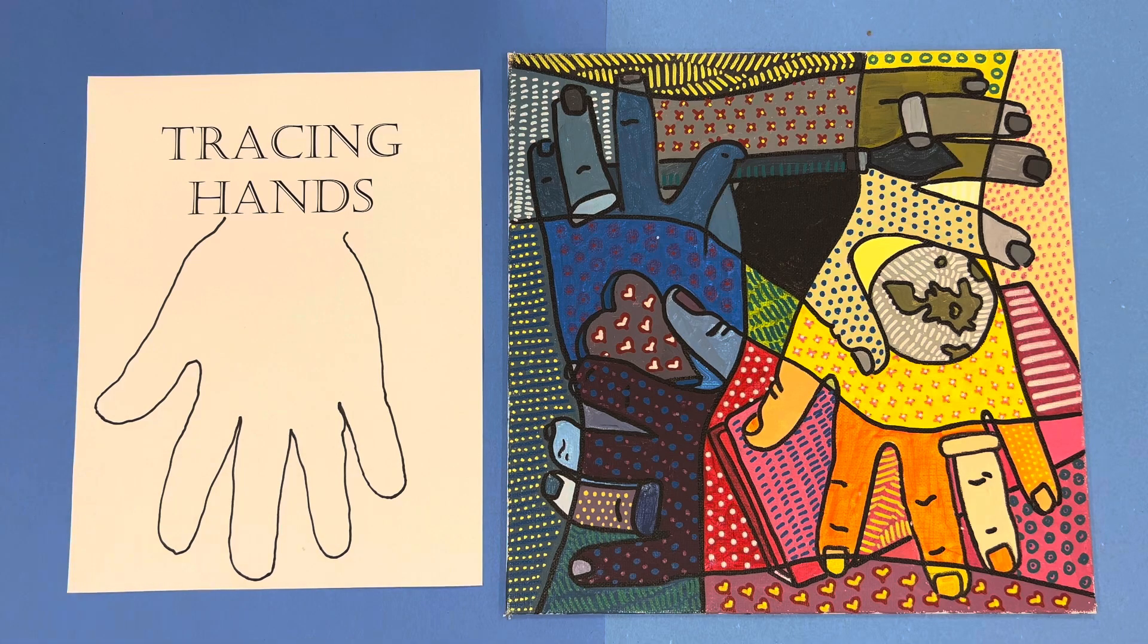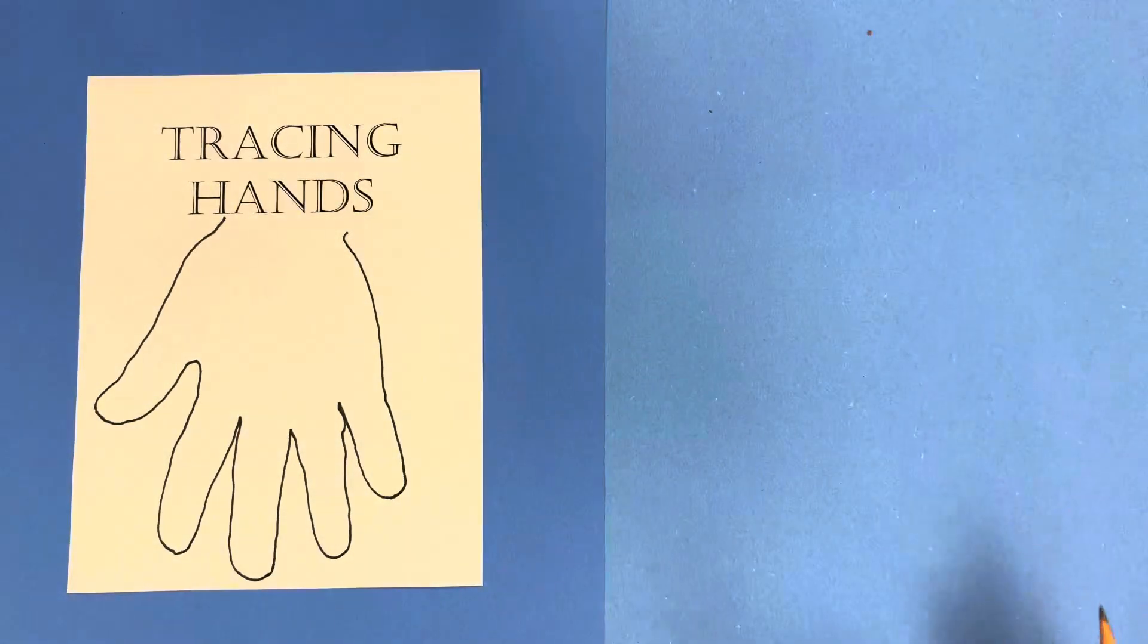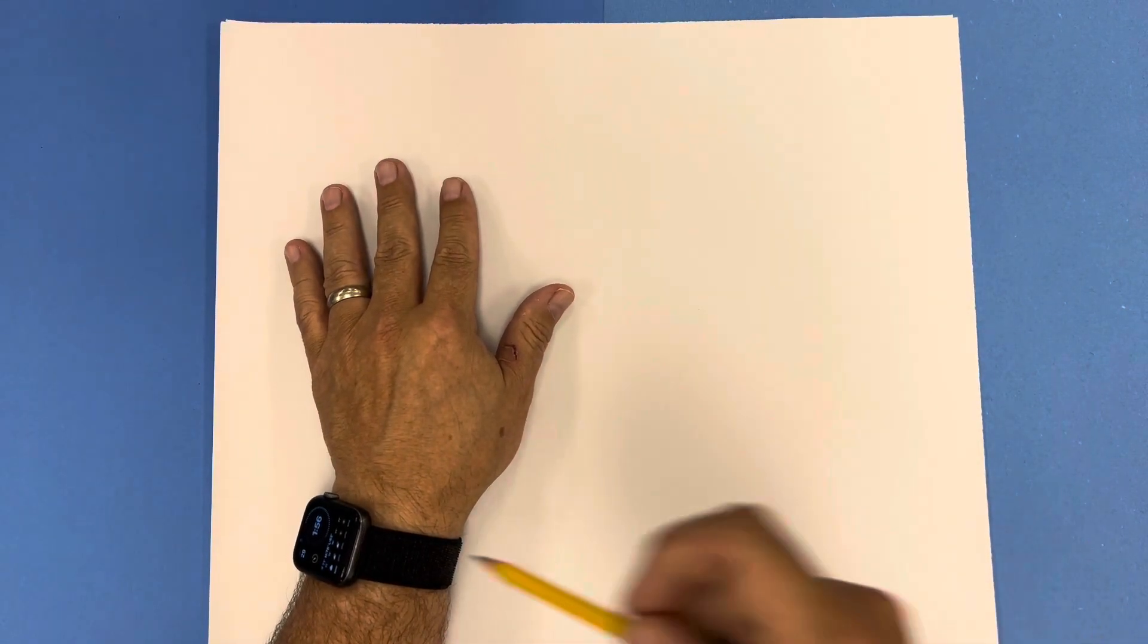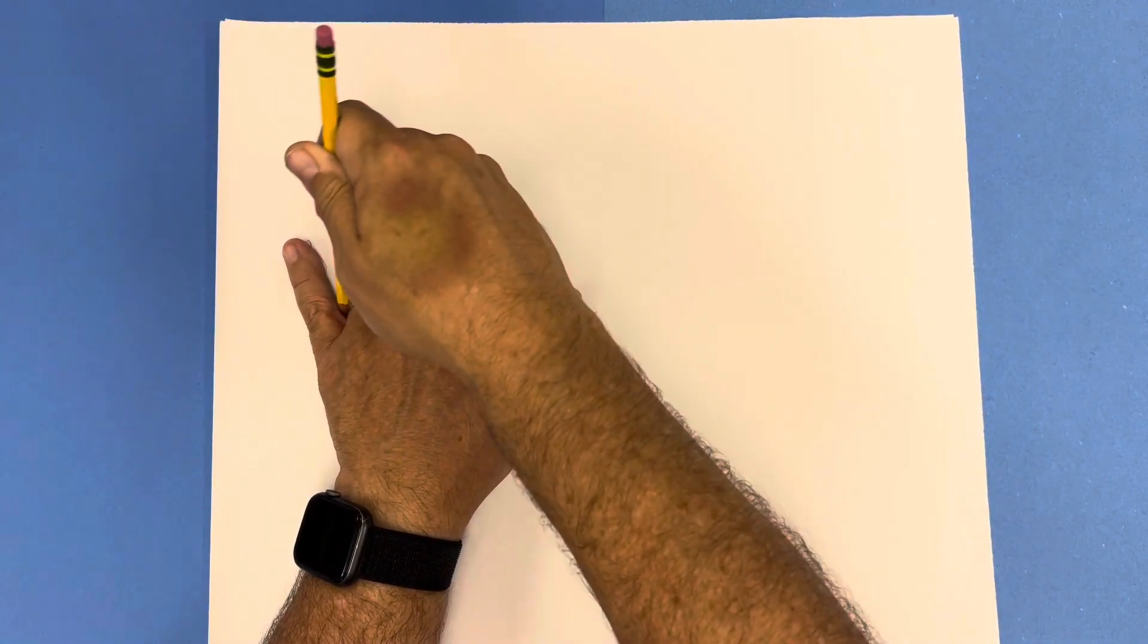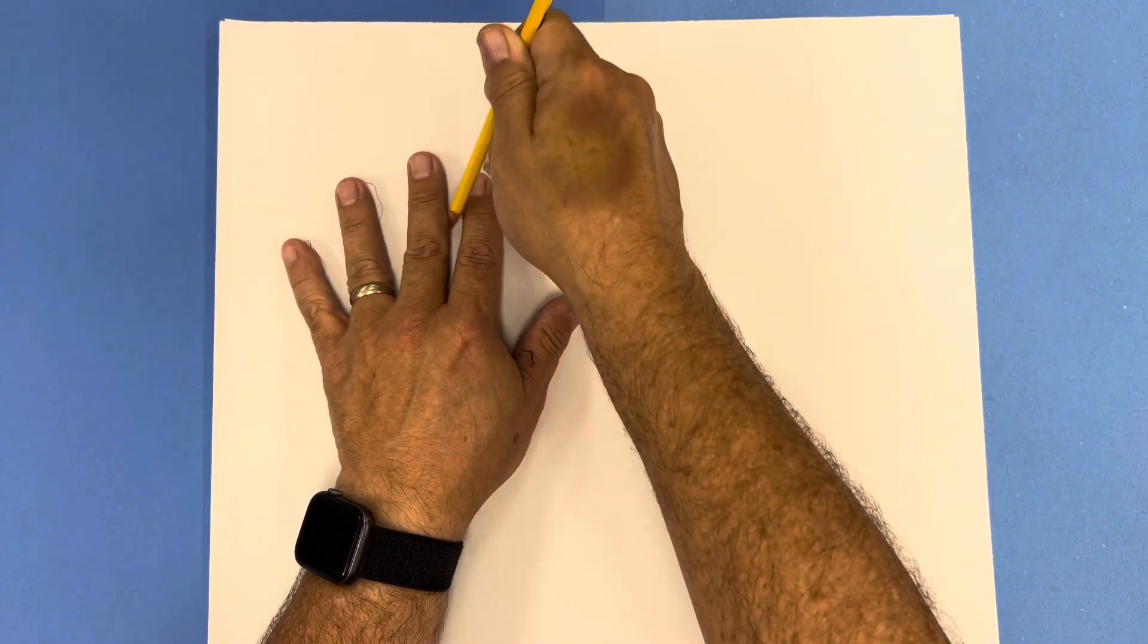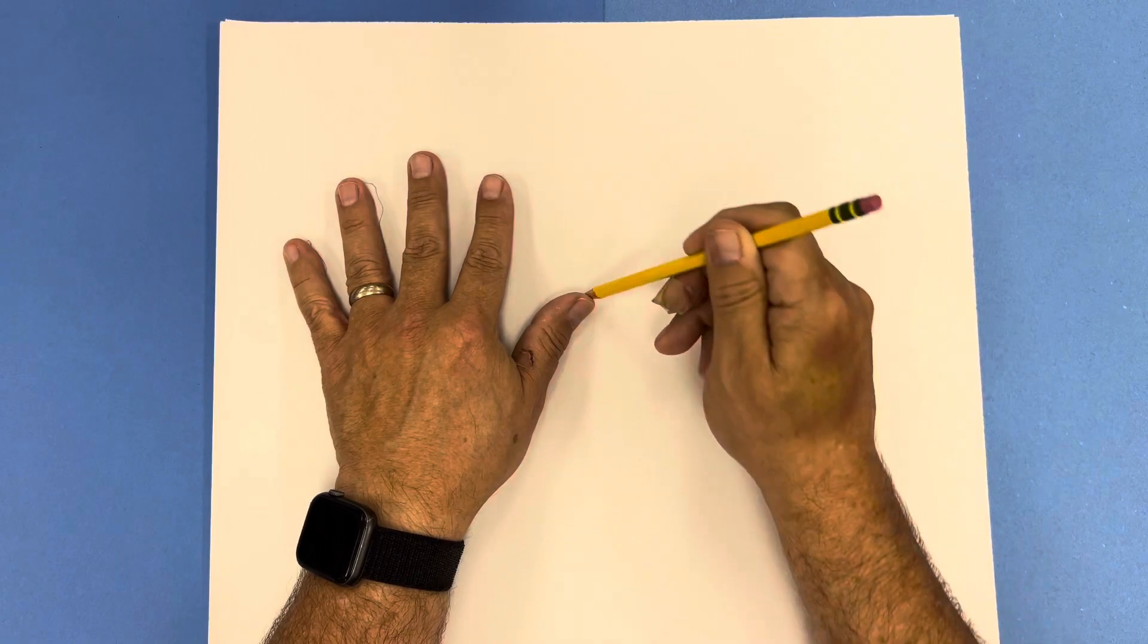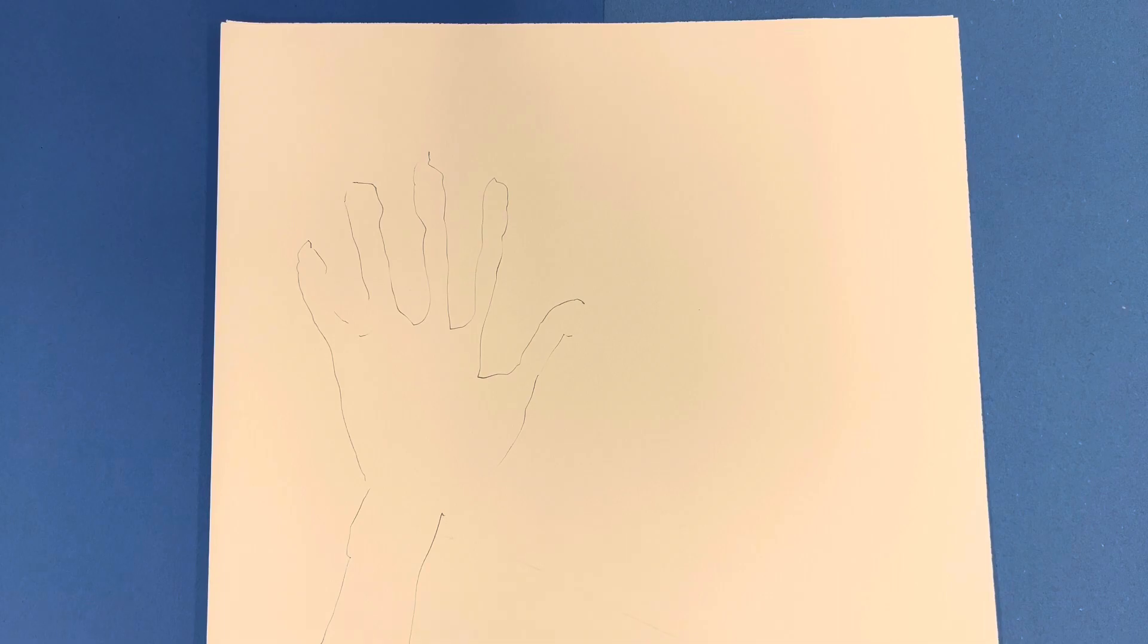You would think that tracing a hand is a really simple thing to do but it's actually easy to mess up. When we trace a hand sometimes people will put their hand on and the pencil kind of goes underneath when they're doing the tracing and they're not really paying attention to making good clean lines. When I trace it and I'm digging the pencil underneath I end up with something that looks like an alien hand.